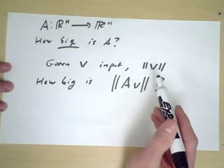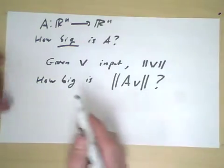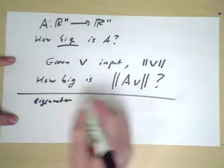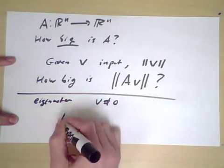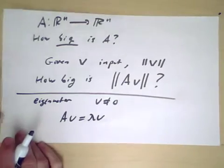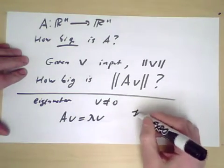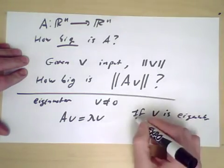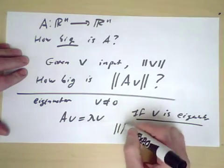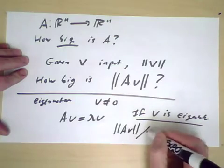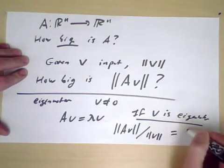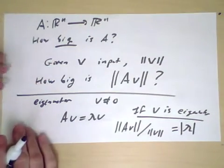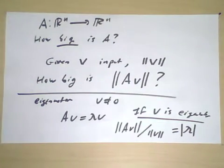This is a more general version of asking about eigenvalues in some sense. Recall an eigenvector is a nonzero vector v, where A v equals lambda v. So if v is an eigenvector, then the length of A v divided by the length of v is of course lambda, or maybe we should say absolute value of lambda.